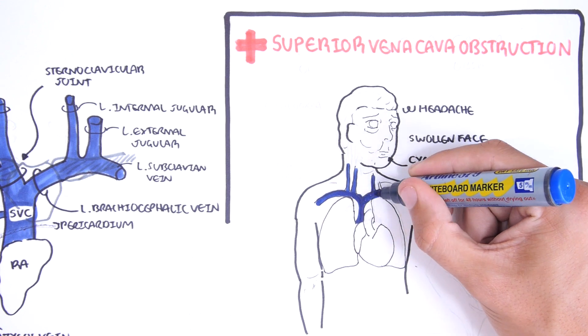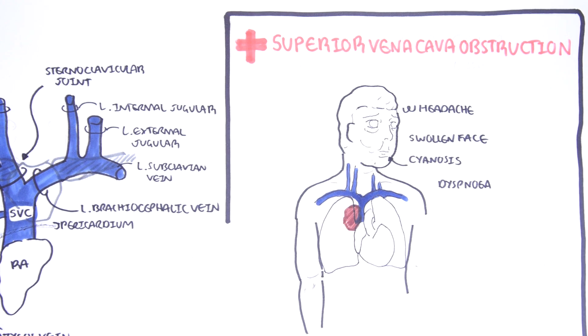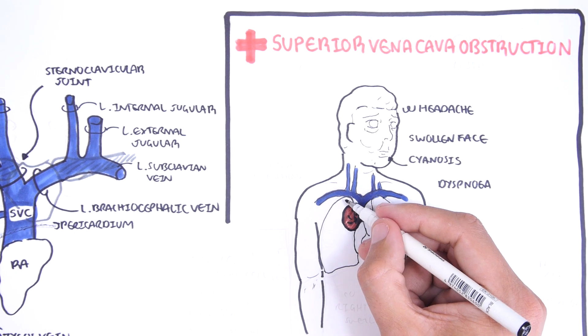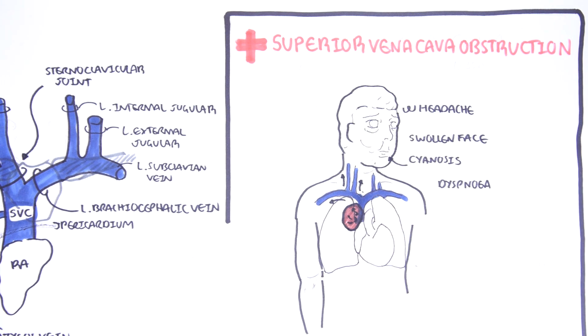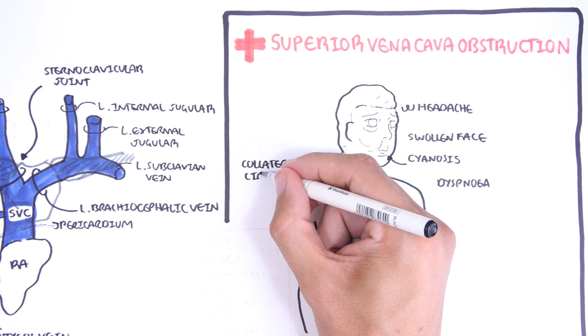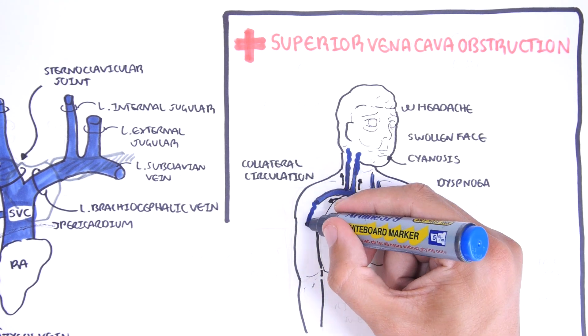These symptoms and signs are typically due to a lung mass partially occluding or compressing against the superior vena cava. When the superior vena cava is partially obstructed, there is an obstruction in blood flow, and as a result, collateral circulation occurs.